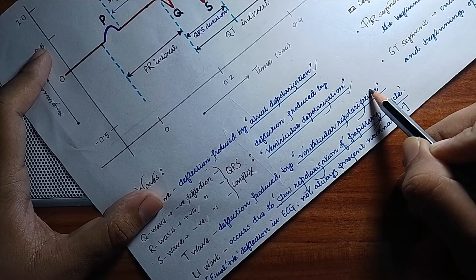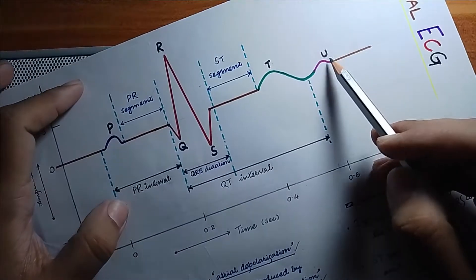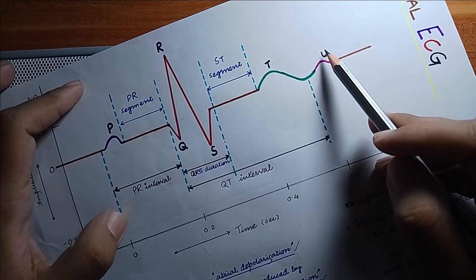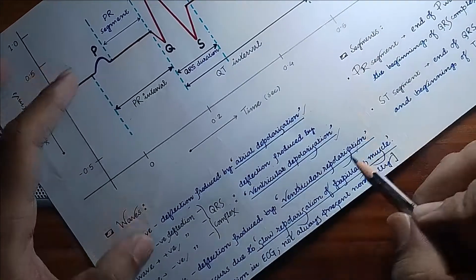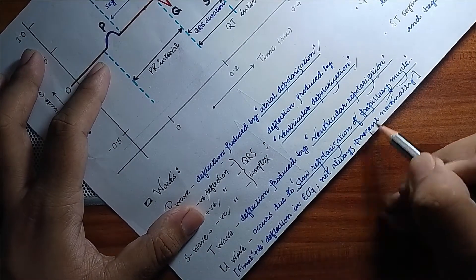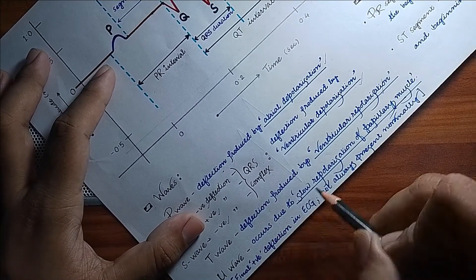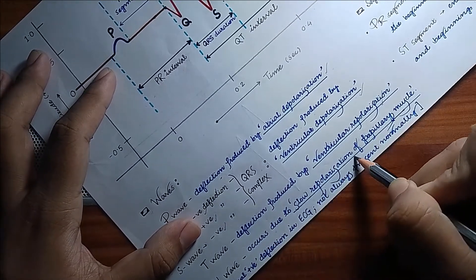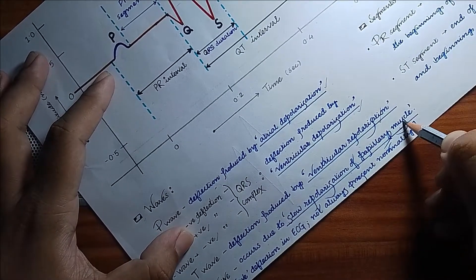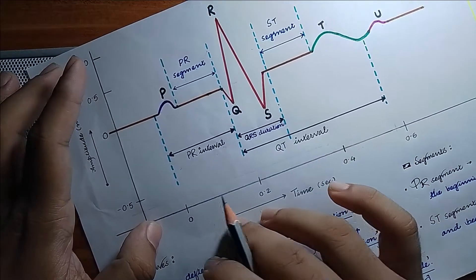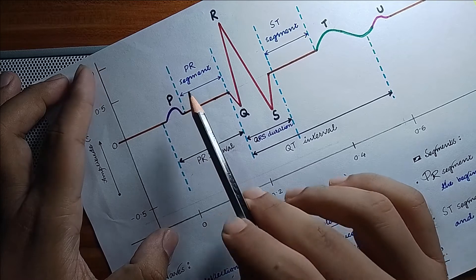Now you can also see a U wave. It is not seen commonly in ECGs, but it occurs due to slow repolarization of papillary muscles. Now we will see the segments. There are two segments: PR segment and ST segment.